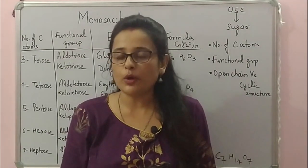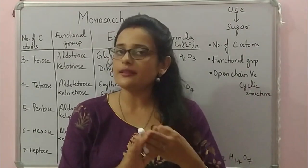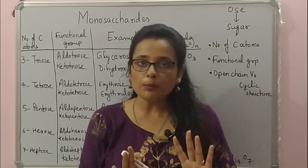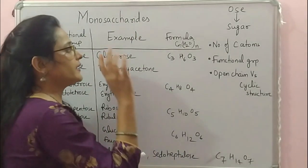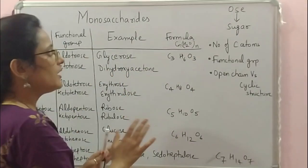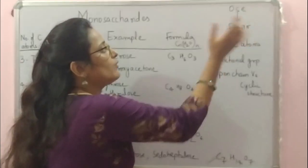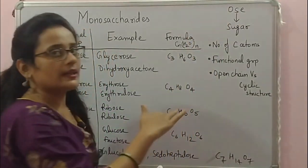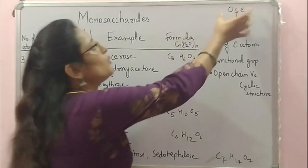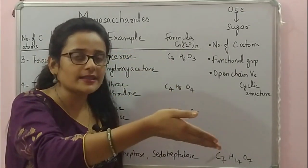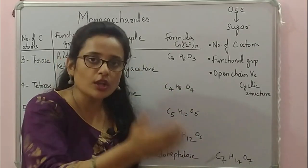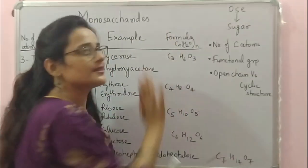Whatever the type of carbohydrate — mono, di, oligo, or poly — these three things will always be present: C, H, and O; aldehyde or ketone; and polyhydroxyl groups. All types of carbohydrates have one general molecular formula: Cn(H2O)n. All sugars also share one common surname ending in '-ose': glucose is a monosaccharide with the suffix -ose, sucrose is a disaccharide with -ose, and raffinose, a type of oligosaccharide, also has -ose in its name.